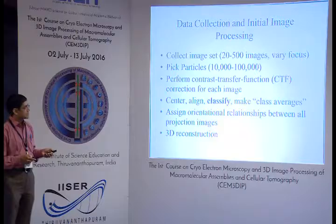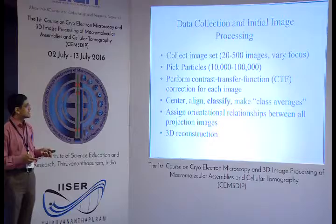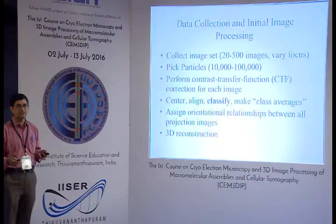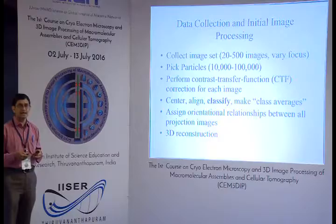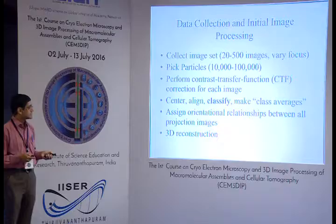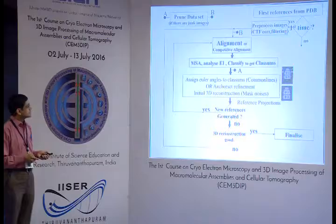Basically you do data collection, pick particles, perform contrast transfer function correction — which you are familiar with from the last two days of lectures. You have to do alignment before you do classification; without alignment, classification is irrelevant. If you want to find out the heterogeneity or variation, the particles have to be aligned and assigned orientation relationships between all projection images, and that will give the 3D reconstruction.